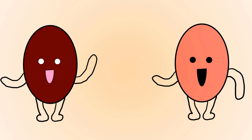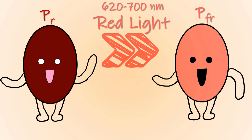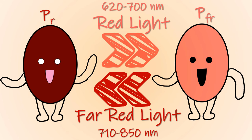Phytochromes are naturally synthesized in the Pr form. When the Pr form is exposed to red light, it is converted to the Pfr form. This change can be reversed by exposure to far-red light. In response to the photoperiod, the leaves are capable of sending signals that regulate flowering and seed germination. The presence of Pr or Pfr determines flowering in long day plants and short day plants.